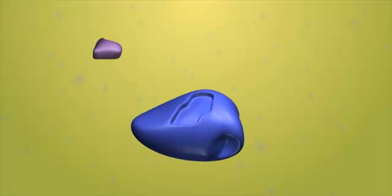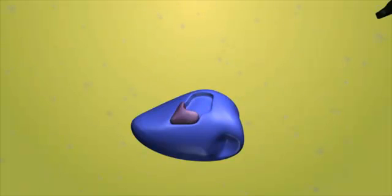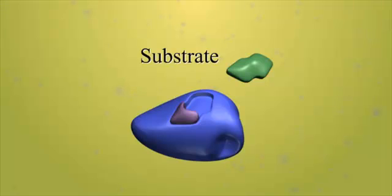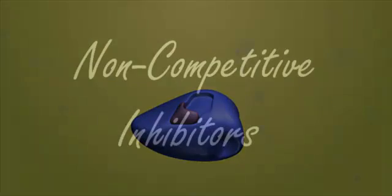A substance that slows down or stops an enzyme-controlled reaction is called an inhibitor. A competitive inhibitor molecule has a similar shape to that of the substrate molecule. They are therefore able to block the active site so that no substrate molecules can fit into it.